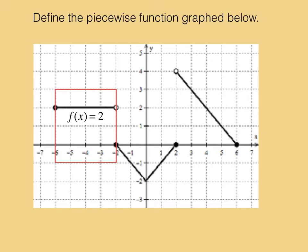But it is only defined from negative 6 through negative 2, including the endpoint at negative 6, not including the endpoint at negative 2.